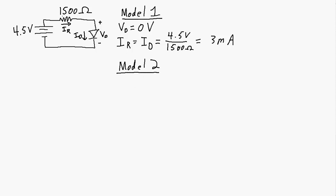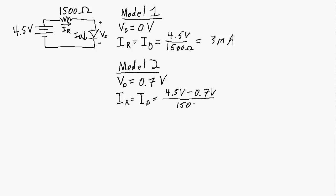Model 2 assumes a constant voltage drop across the forward-biased diode. A typical value for a silicon diode is about 0.7 volts. The voltage across the resistor is therefore 4.5 volts minus 0.7 volts. The current through the resistor — equal to the current through the diode — is 4.5 minus 0.7 divided by 1500 ohms, which gives us 2.53 milliamps.